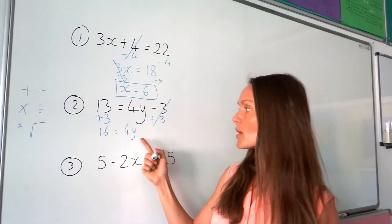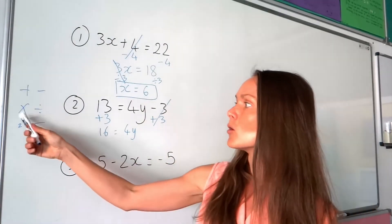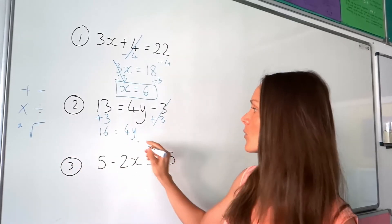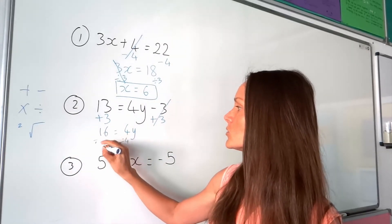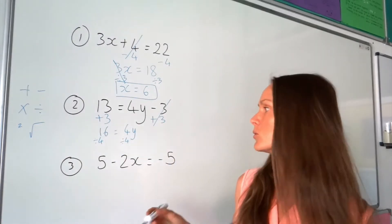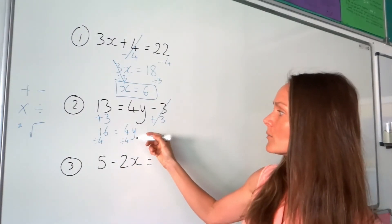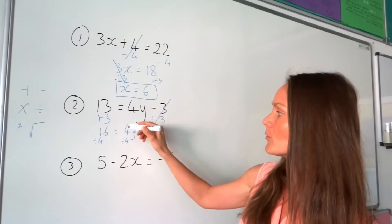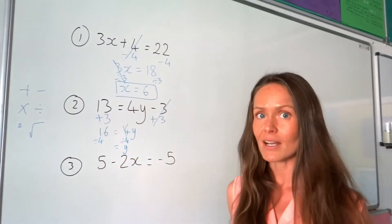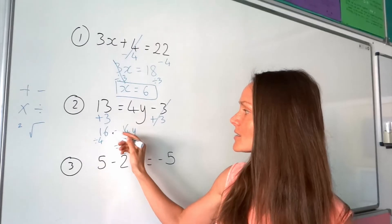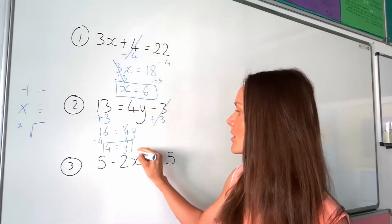Now, y is being multiplied by 4. The opposite of multiply is divide, so I need to divide by 4, remembering to do the same on the left-hand side as well. Where I do the opposite, 4 divided by 4 is 1, so that's gone and I'm left with y. On the left-hand side, 16 divided by 4 is 4.